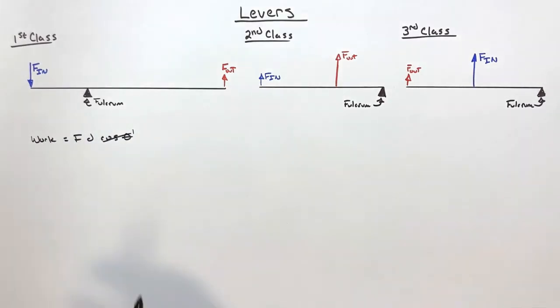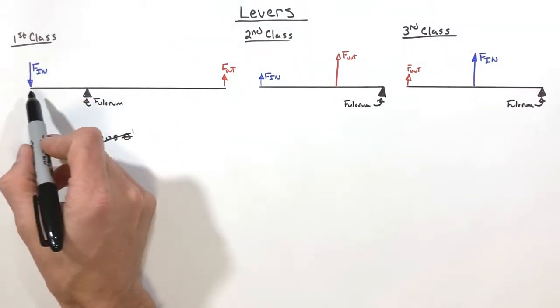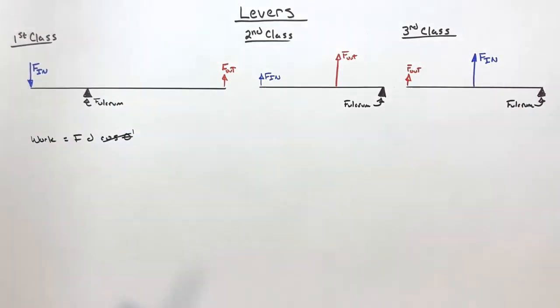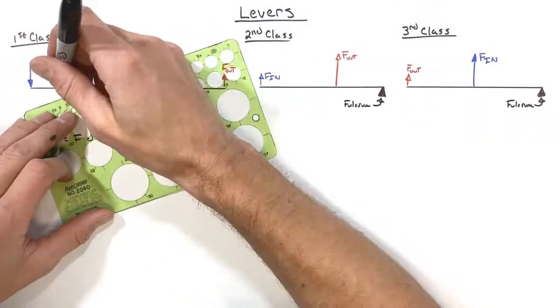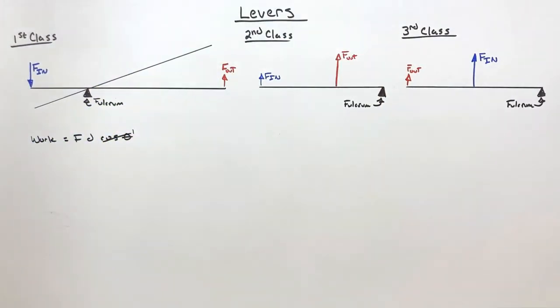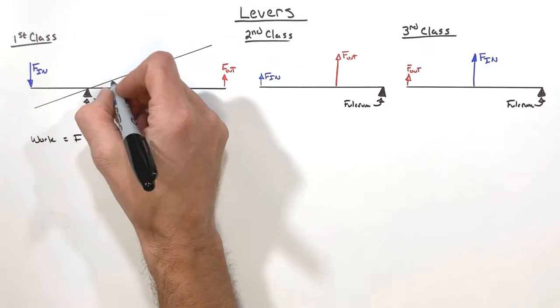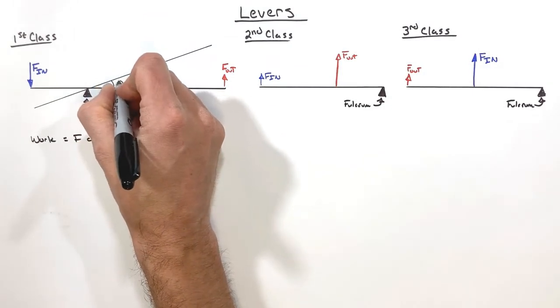So in order to discuss the displacement of a lever, let's let this input force rotate this lever around the fulcrum like this. So by pushing on the end of this lever, the lever is going to rotate, and we're going to say this rotates through some angle theta.